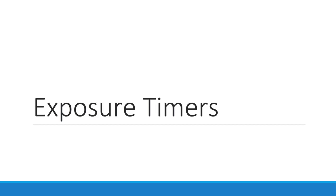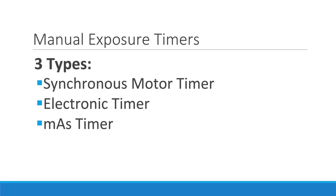In this video we will review the types of exposure timers used in radiography. A timer is part of the high voltage circuit to control the duration of the x-ray exposure. It consists of a mechanical or electronic device that is able to break or terminate the high voltage across the x-ray tube. This takes place on the primary side of the high voltage section when the set amount of time has been achieved. There are three types of timers used on modern x-ray equipment.